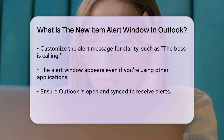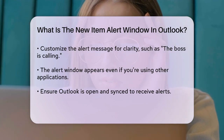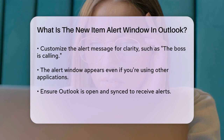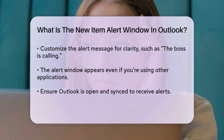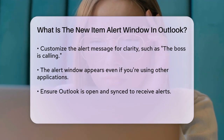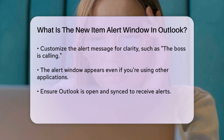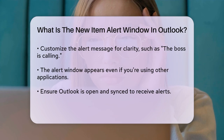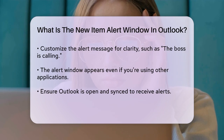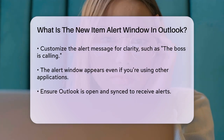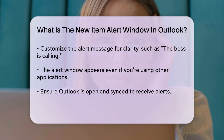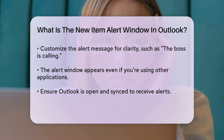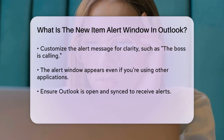You can also customize this alert further. For instance, you can add a sound to the alert so you don't miss it if you're not looking at the screen. To do this, go back to the Rules and Alerts window, select the rule you created, and choose the option to play a sound. You can pick from various sound files available in Outlook.